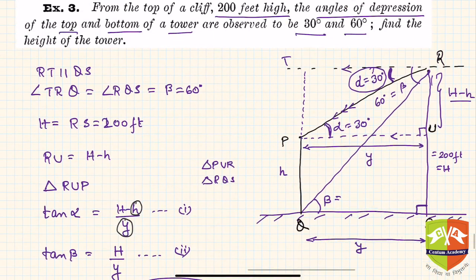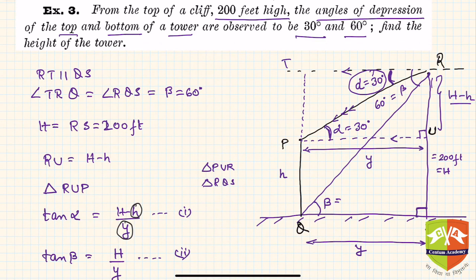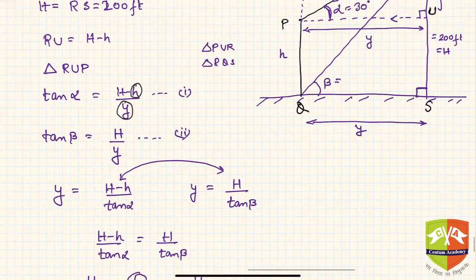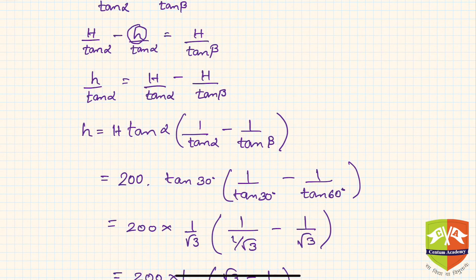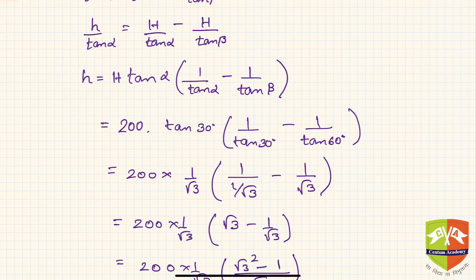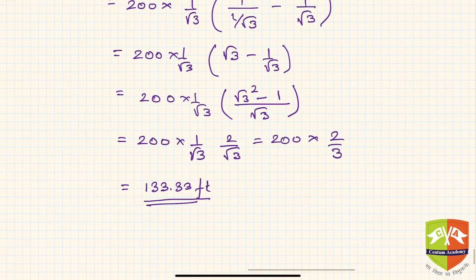Quick recap: we drew a representative diagram and showed all the information in it. Then we identified two right angle triangles where we could utilize the given data. We used geometry concepts — parallel lines and alternate interior angles — to find all angles. Finally, we set up trigonometric ratio equations, eliminated the unknown y, and arrived at the height of the tower.